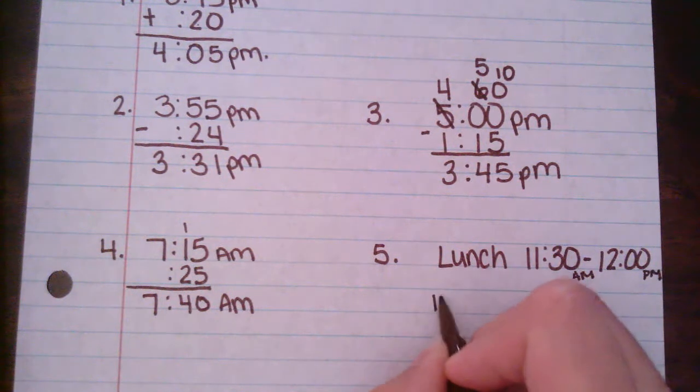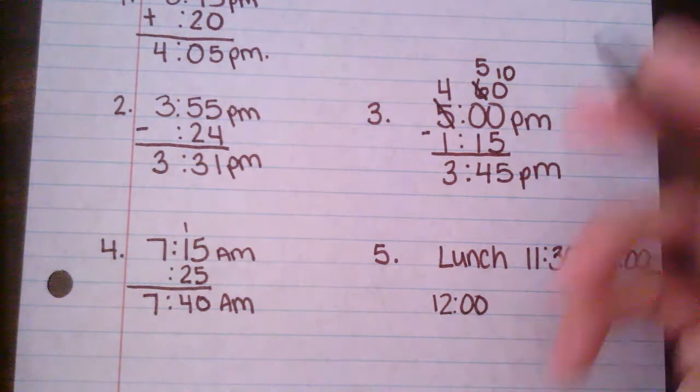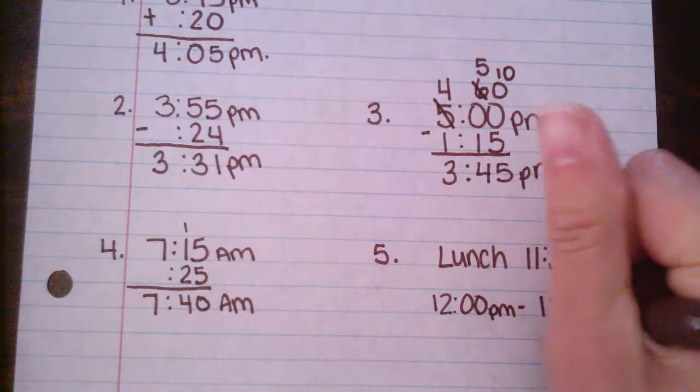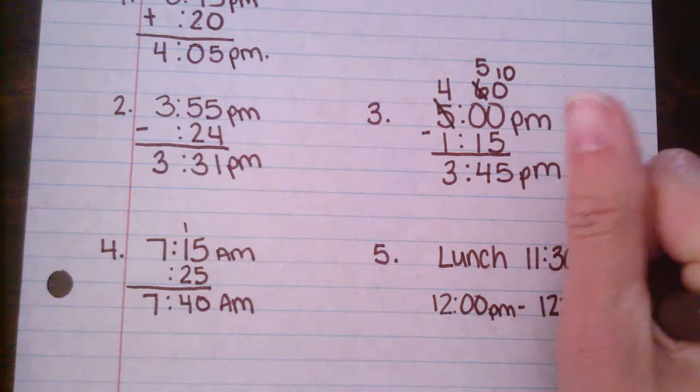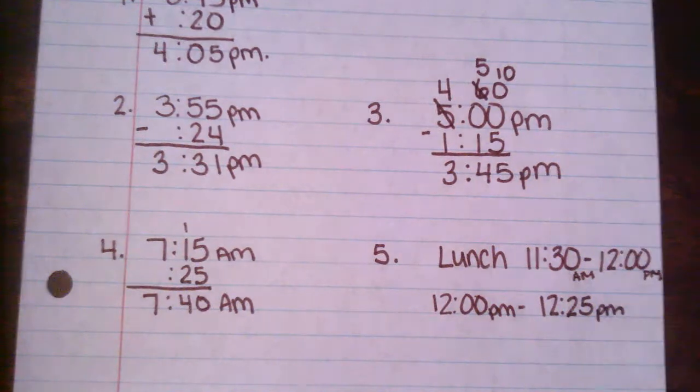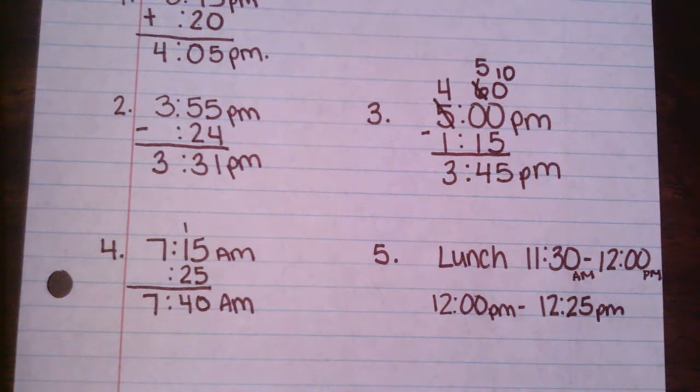Just like we start at 12 o'clock p.m. are a recess and we go to 12 o'clock or 12:25 p.m. for our recess. So the a.m. and p.m. tells us what time of day.